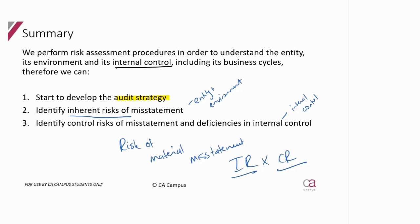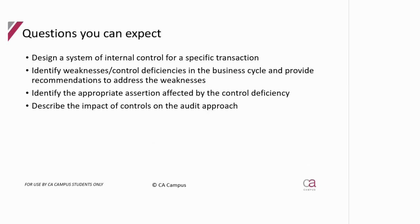Next week we go into how to pick up all the risks — now that we understand everything about the business, we can start identifying risks in each element of the entity and its internal control. The types of exam questions you could be asked include: designing a system of internal control for a specific transaction, where you'd discuss the cycle, the documents, the people fulfilling different roles, and the controls.